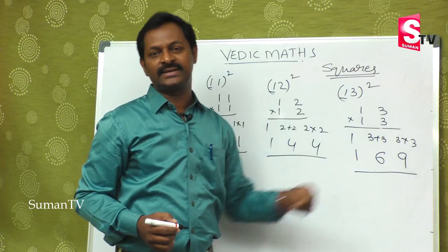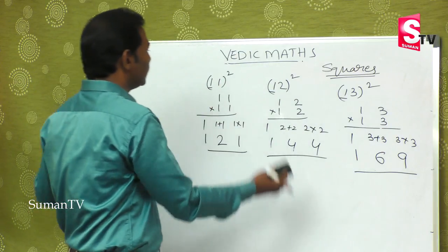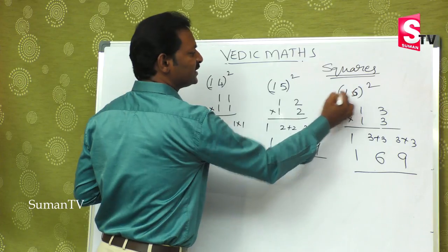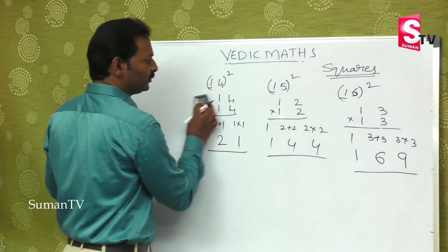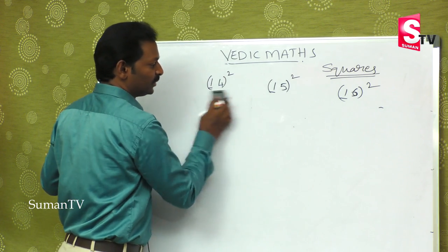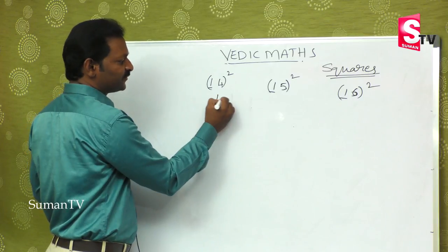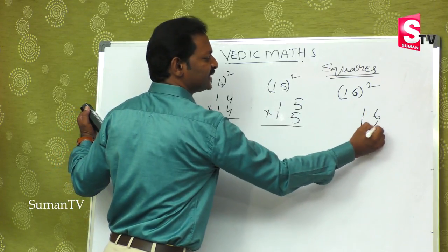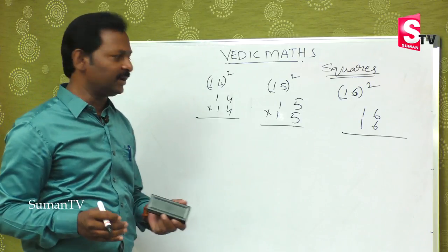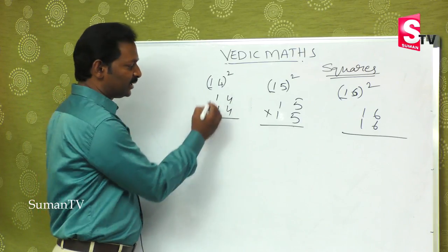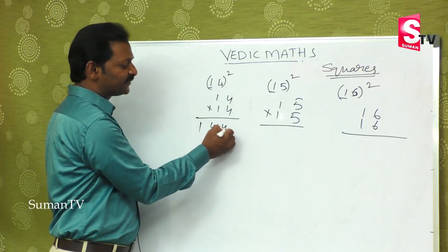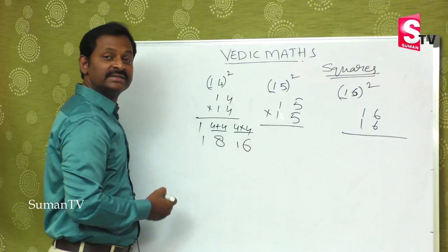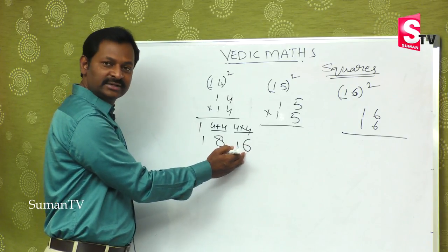Now suppose it is 14 square, 15 square, or 16 square. Let us check: 14 into 14, 15 into 15, 16 into 16. For 14 square: 1 first, then 4 plus 4 is 8, then 4 into 4 is 16. But 16 is a double digit number, so we apply the balancing rule here.